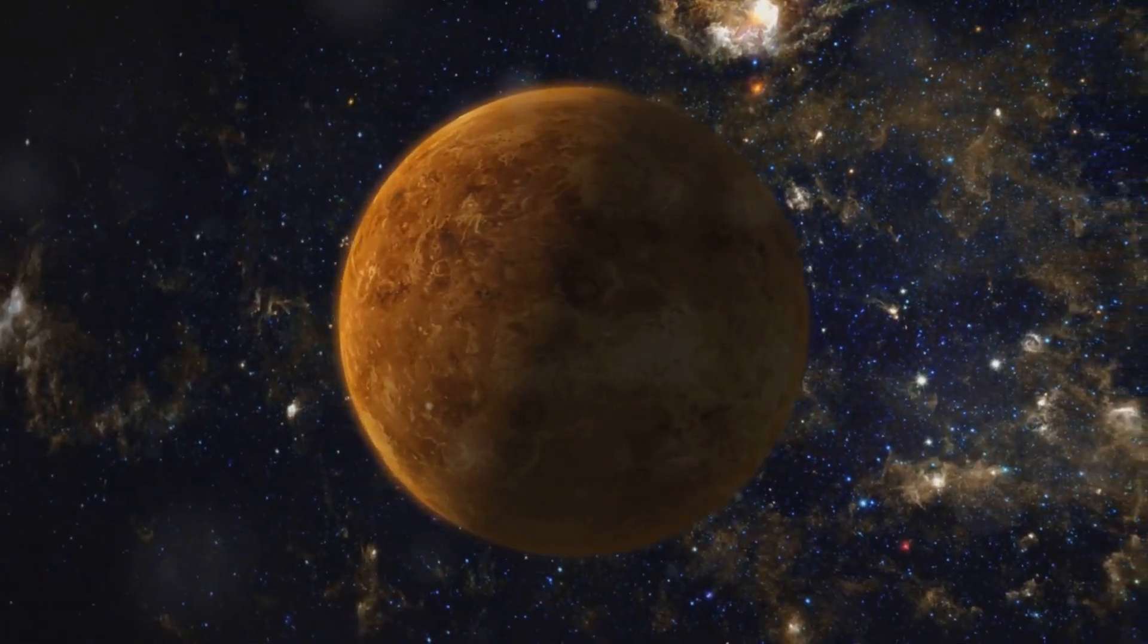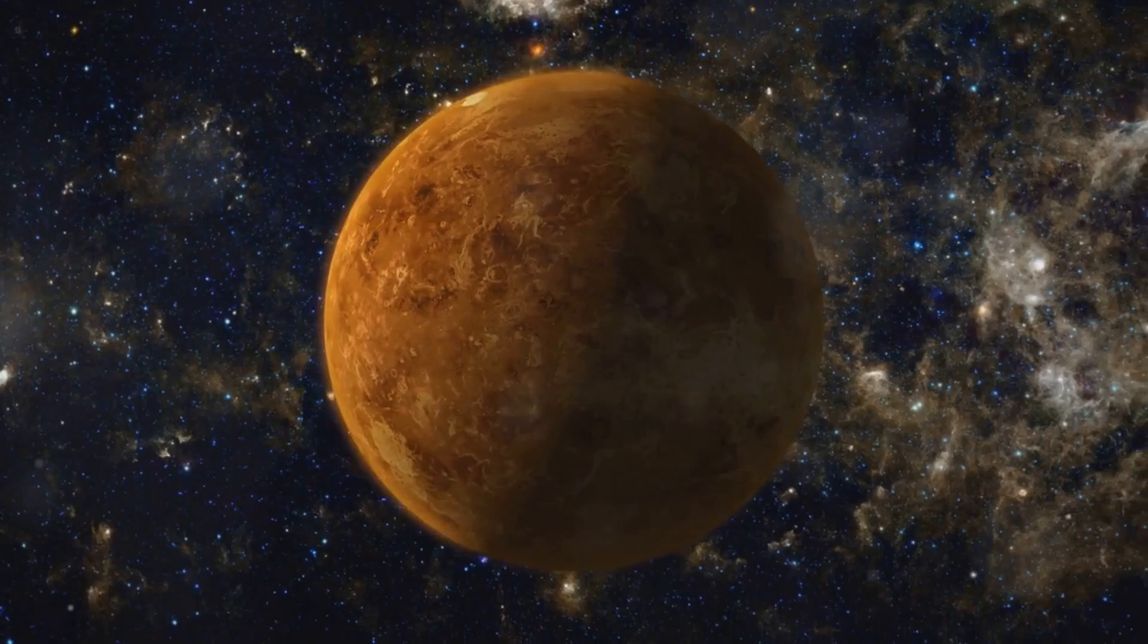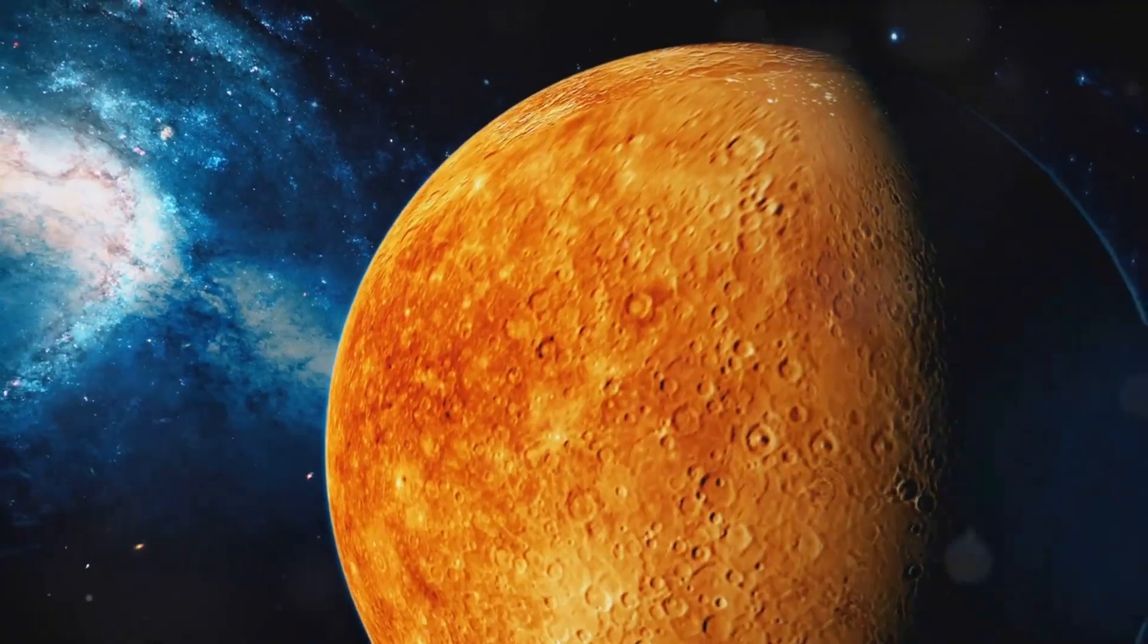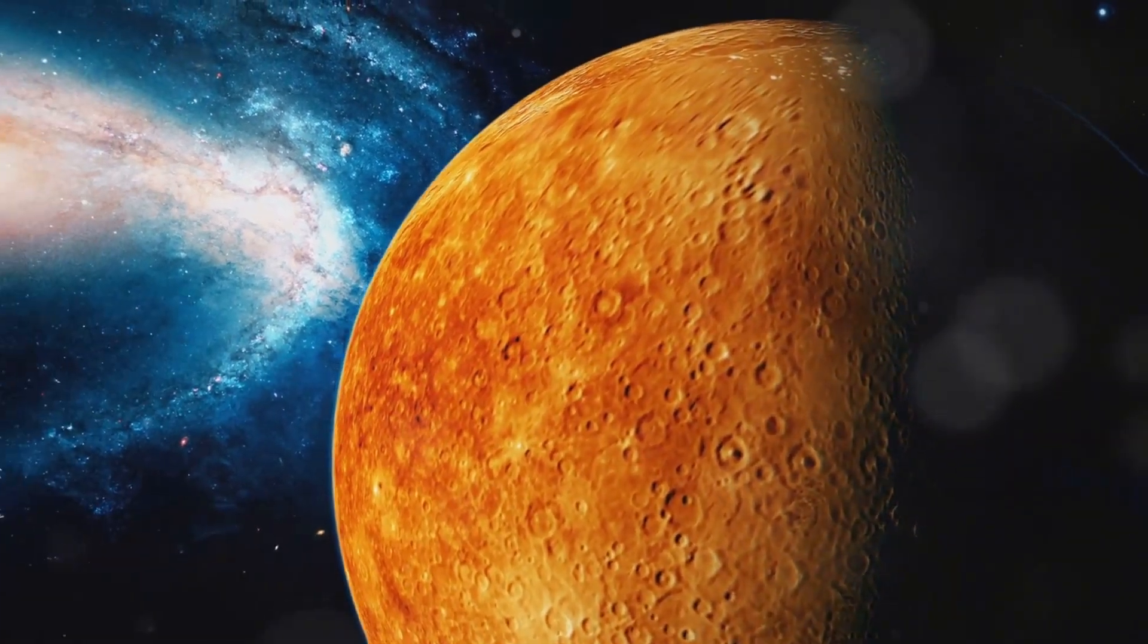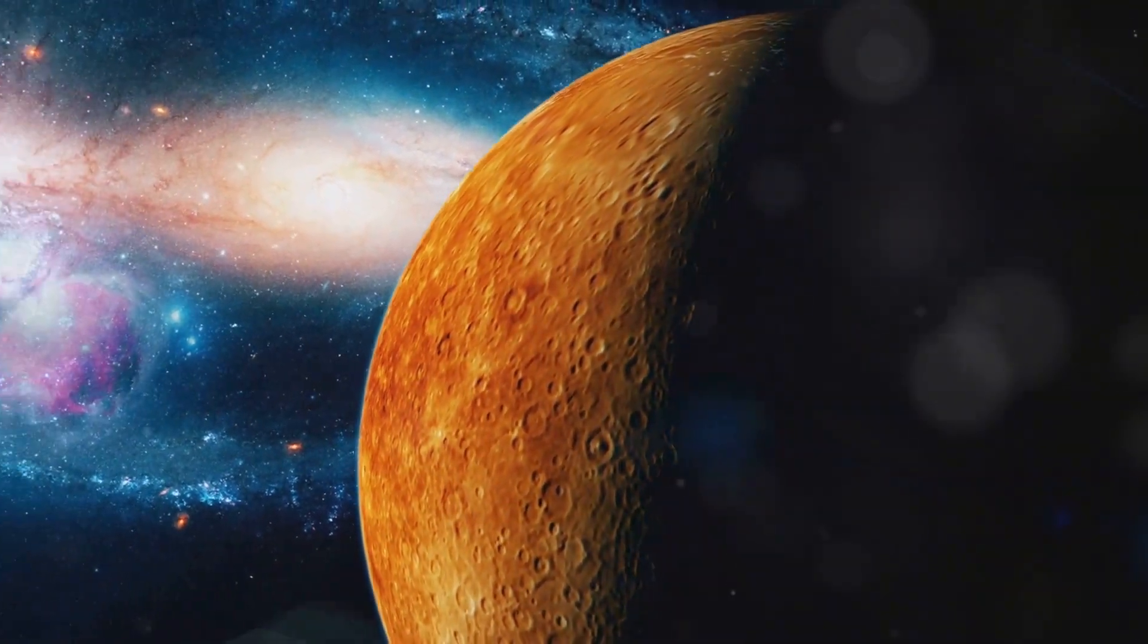Venus: This planet is super hot. With surface temperatures hot enough to melt lead, Venus is the hottest planet in our solar system. It's even hotter than Mercury, even though it's farther from the sun. Its thick atmosphere traps heat in a runaway greenhouse effect.